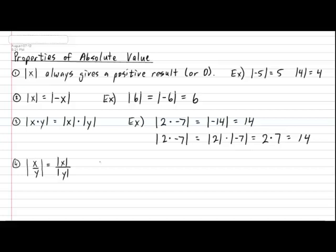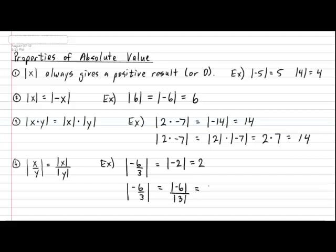Here's a quick example to show this in action. Suppose I ask you to calculate the absolute value of negative 6 divided by 3. If you do this without changing anything, this simplifies to the absolute value of negative 2, which equals 2. Now, if you were to do the same example using the property, then the absolute value of negative 6 divided by 3 can be rewritten as the absolute value of negative 6 divided by the absolute value of 3. That gives you 6 divided by 3, which again gives you 2.